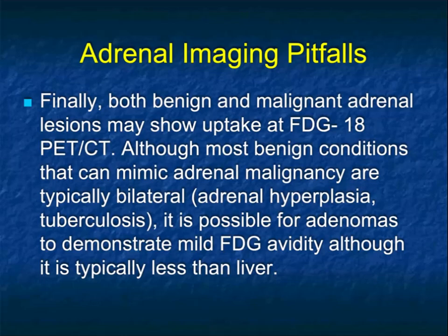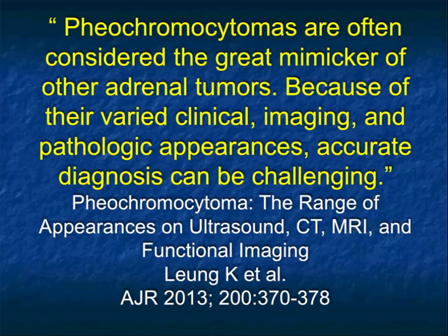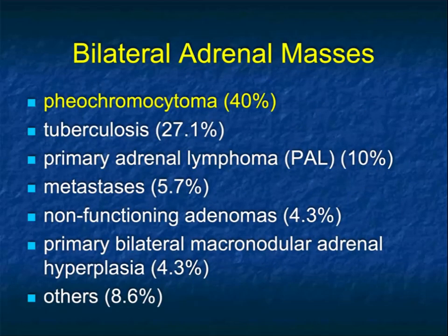Both benign and malignant adrenal lesions can show uptake at FDG PET, although most benign conditions that mimic adrenal malignancy are typically bilateral, like hyperplasia and infection like TB. It's possible for adenomas to demonstrate mild FDG avidity, so it can be a little tricky. The article by Leung makes the point that pheos are often considered the great mimicker of other adrenal tumors, because of their varied clinical, imaging, and pathologic appearances, making accurate diagnosis challenging.